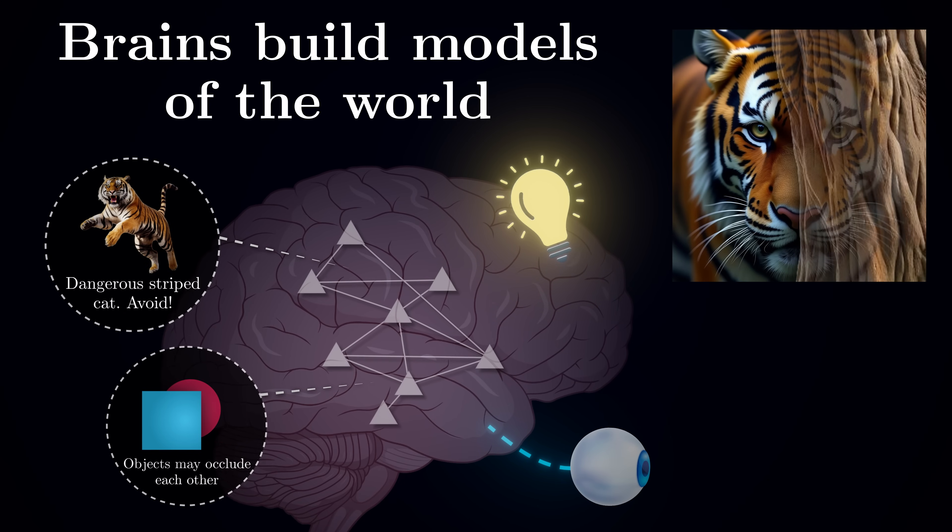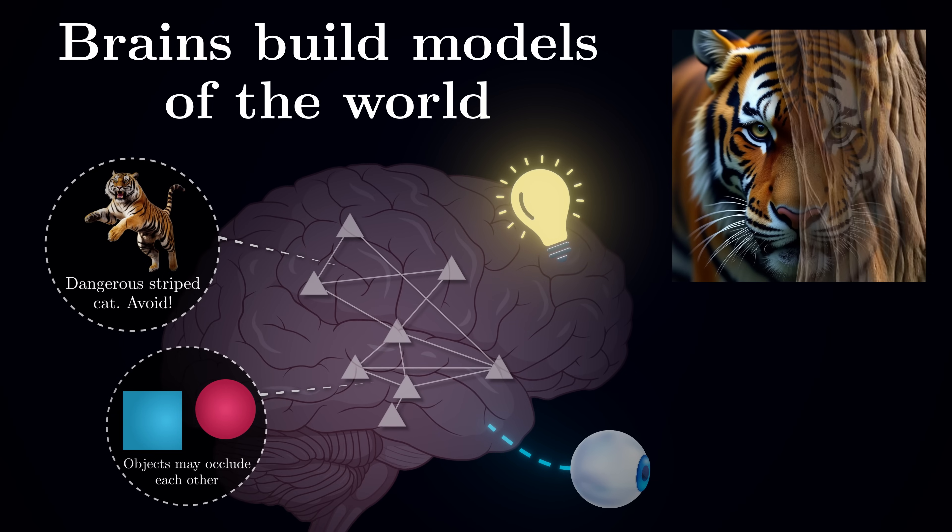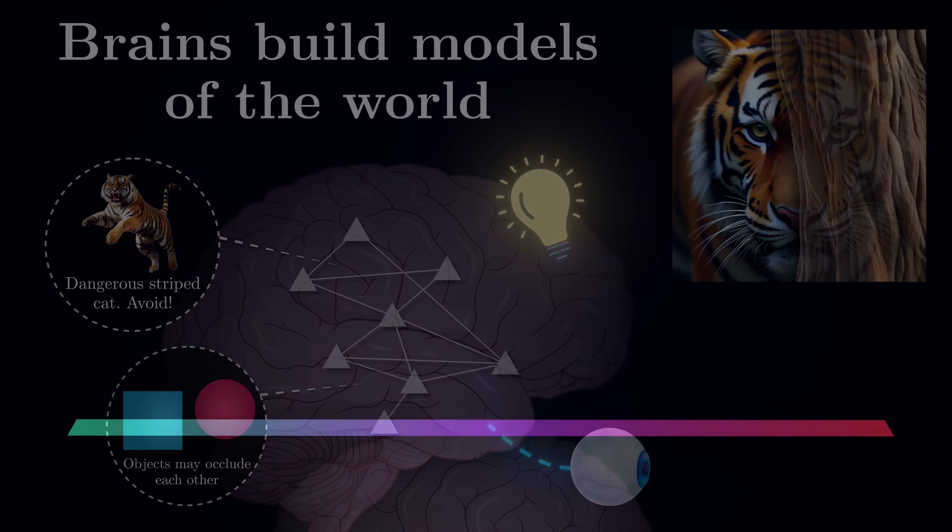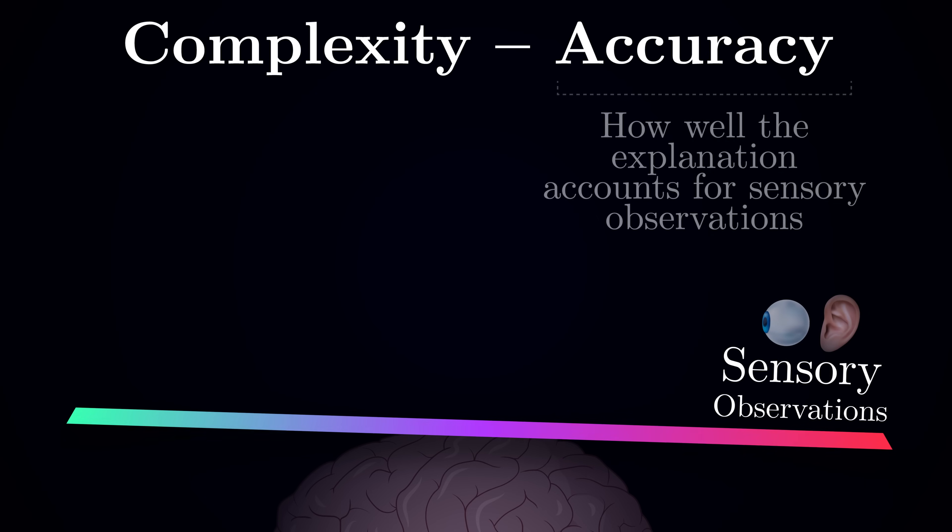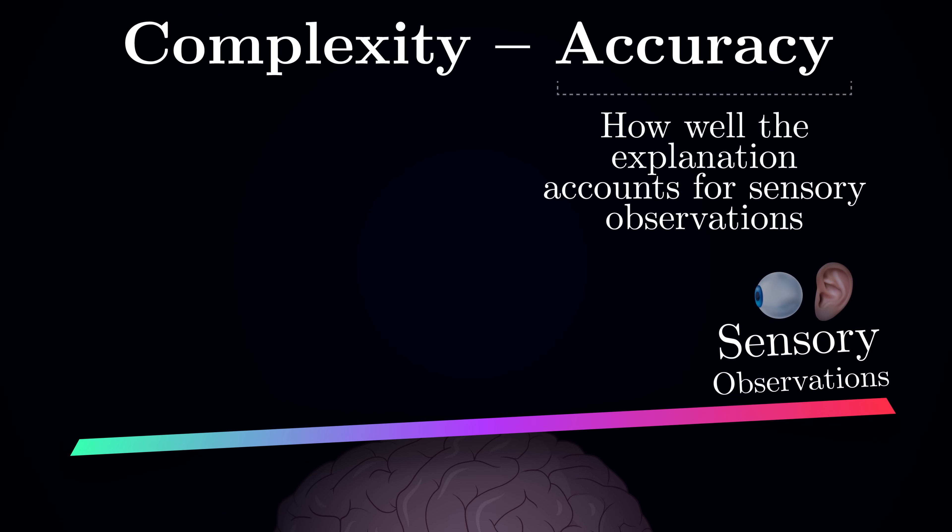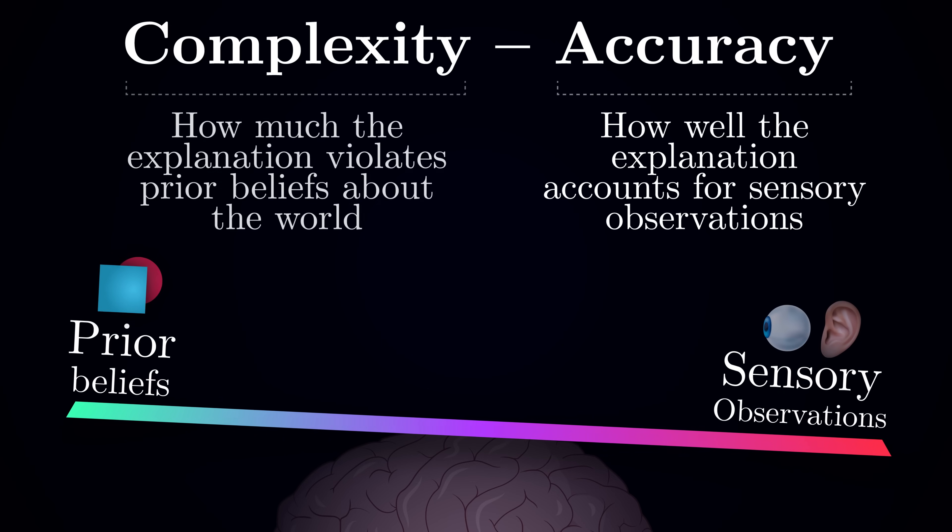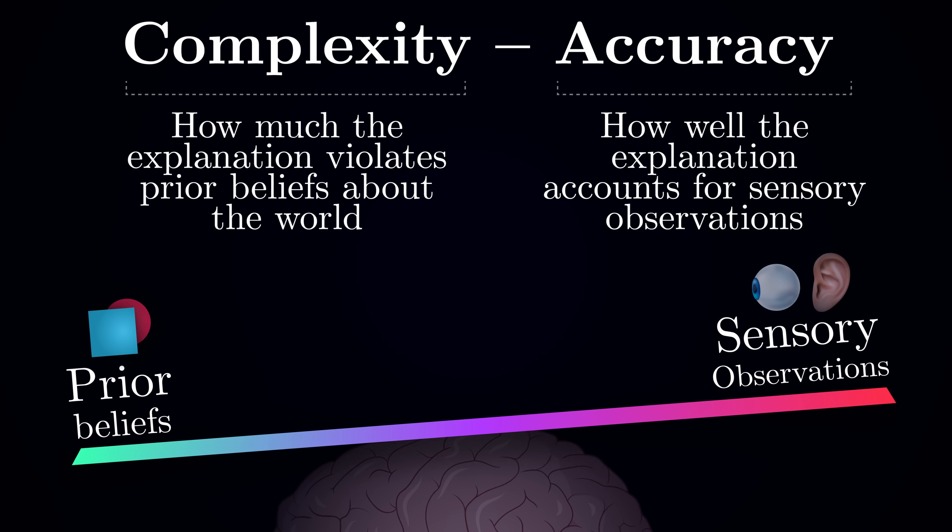This ability to fill in the gaps and come up with plausible explanations for sensory data is at the heart of the brain's evolutionary success. In essence, you can think of your brain like a judge weighing evidence on a scale. On one side, there is what your senses are telling you, the raw data coming in through your eyes, ears, and other modalities. On the other side, there is what you already know about how the world works - your prior beliefs built up through evolution and experience.